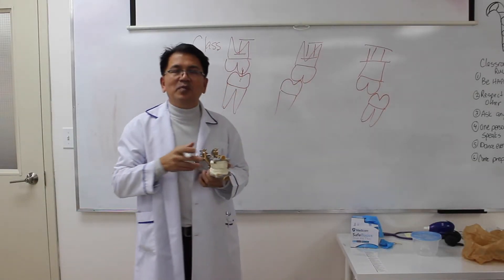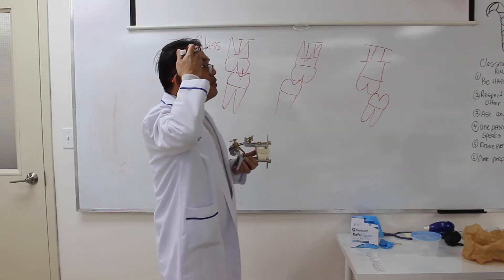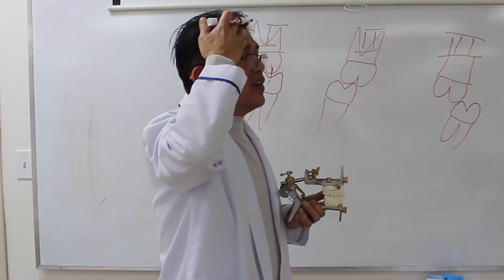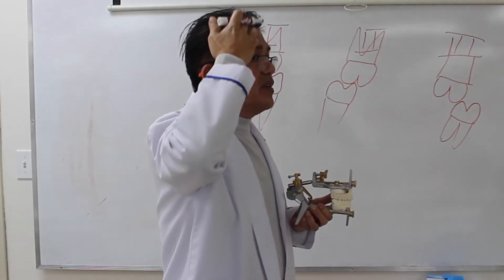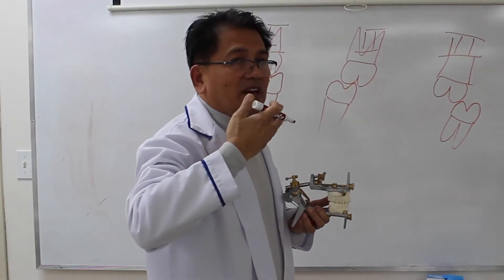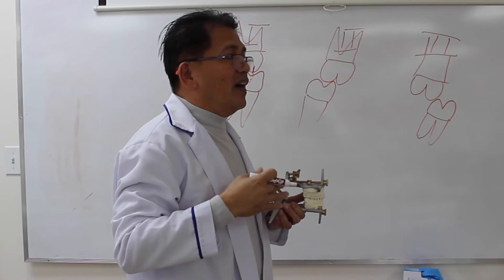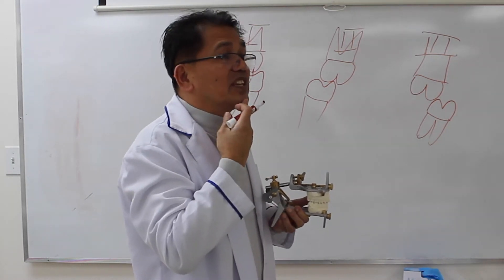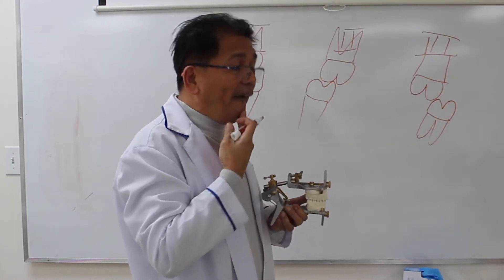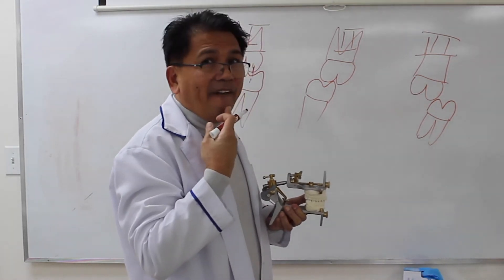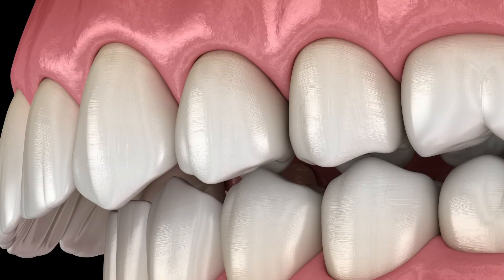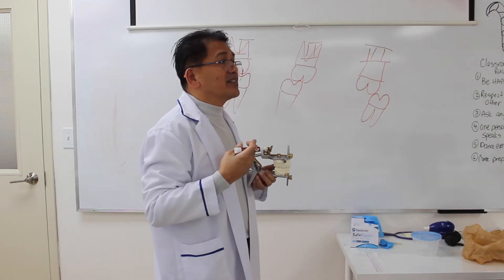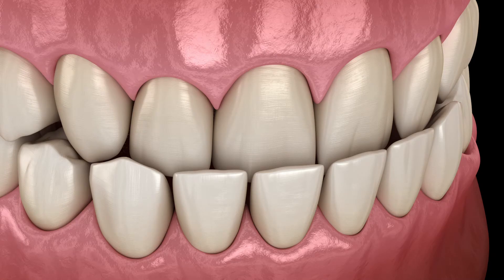Looking at the front of a person: Class 1 usually shows a very nice profile. A Class 2 individual has a receded chin, with the upper jaw sticking out. In Class 3, it's the lower jaw that is sticking out.